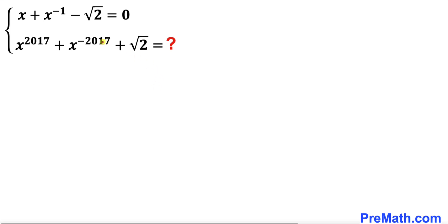Welcome to pre-math. In this video we have got this equation x plus x power negative 1 minus square root of 2 equals to 0, and now we are going to find the value of x power 2017 plus x power negative 2017 plus square root of 2.